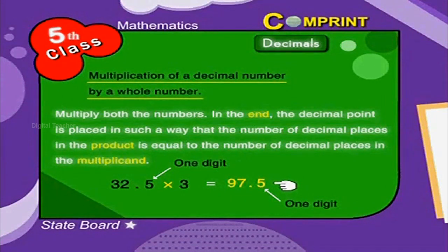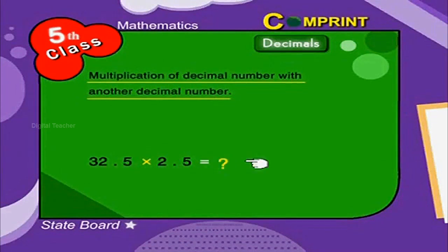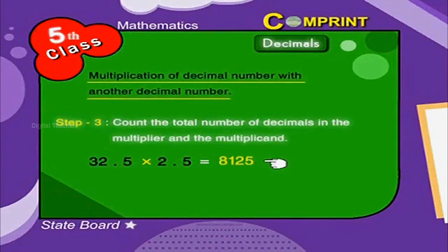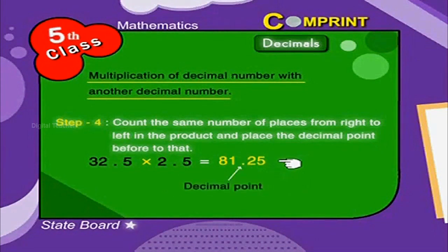Multiplication of a decimal number with another decimal number — for example, 32.5 multiplied by 2.5: first ignore the decimal points and multiply the numbers. Then count the total number of decimal places in both the multiplier and the multiplicand. Count that many places from right to left in the product and place the decimal point. Hence the answer is 81.25.